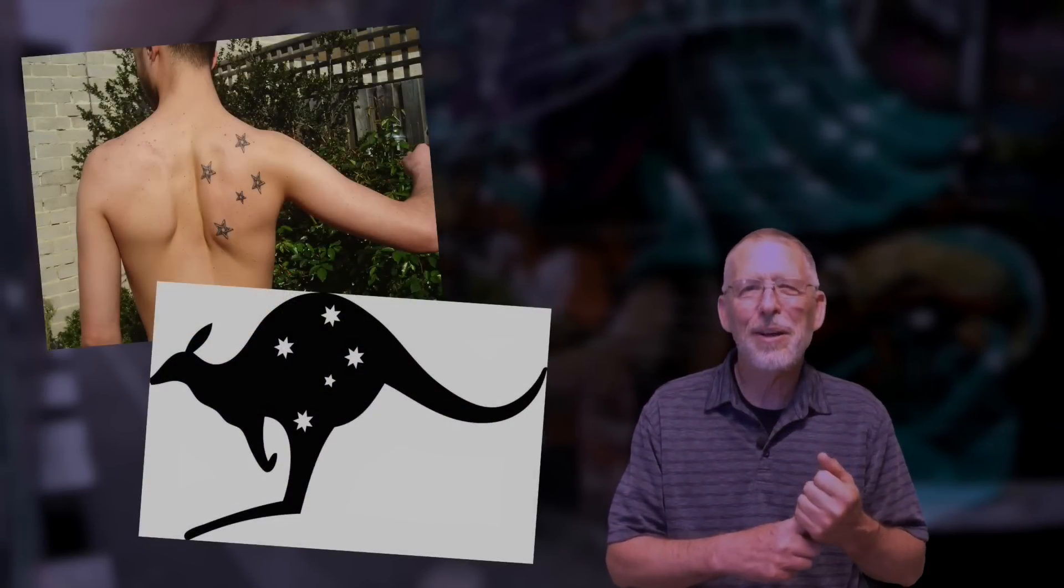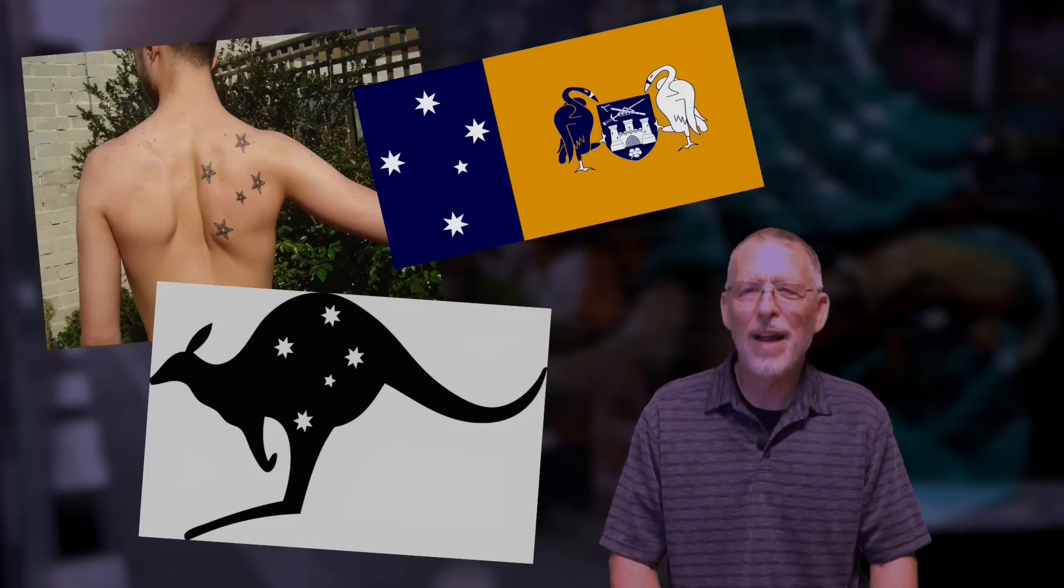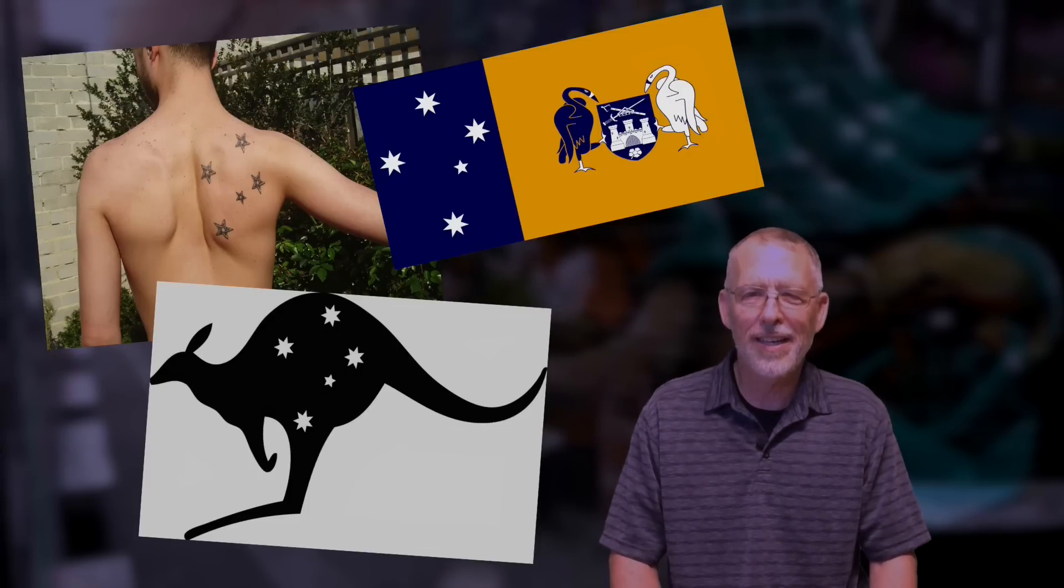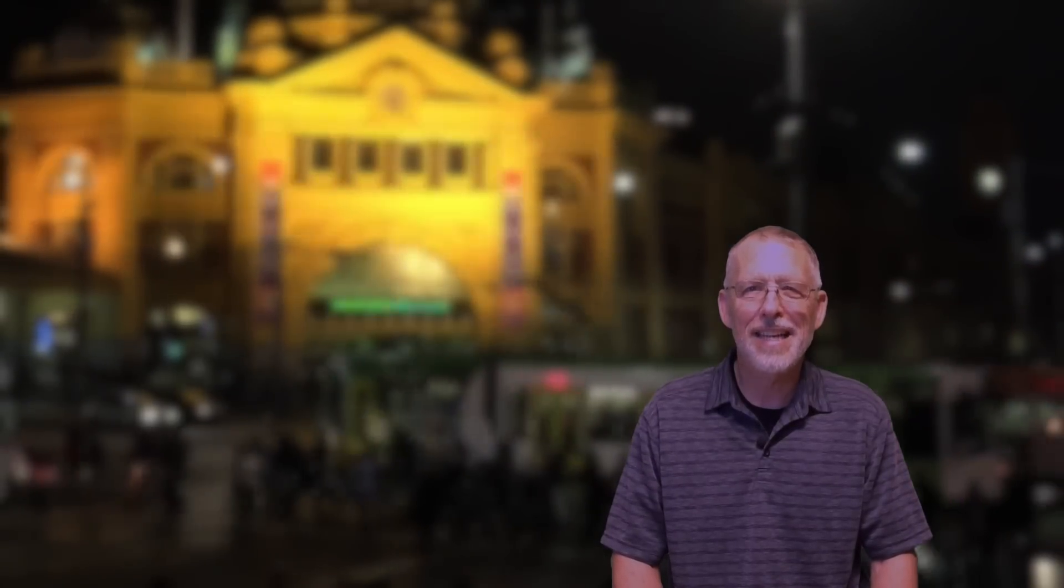I saw images of the Southern Cross everywhere I went in Australia, from tattoos to advertising logos to flags. Because of this popularity, I reckon that most folks in Australia know how to find the Southern Cross in the sky. The Southern Cross has extensive national and cultural significance.